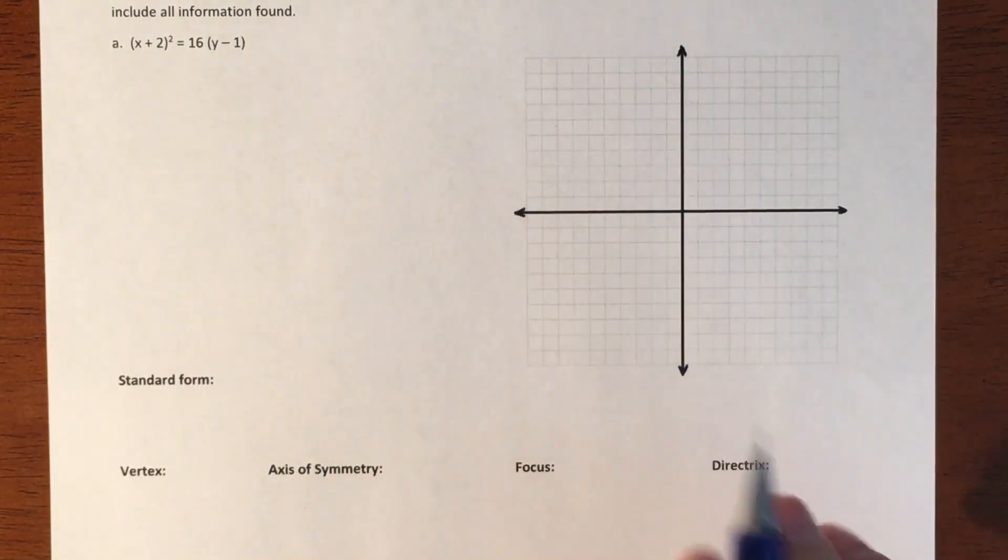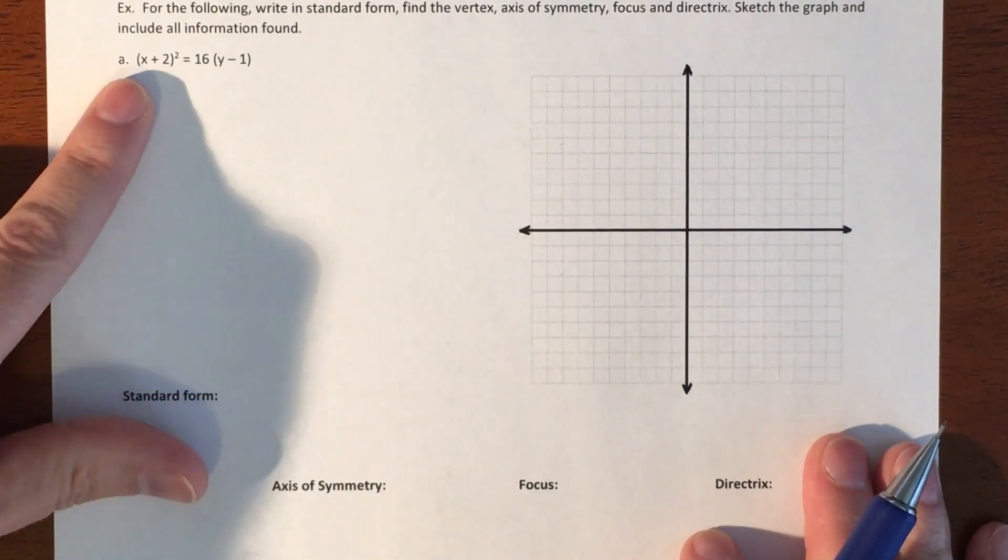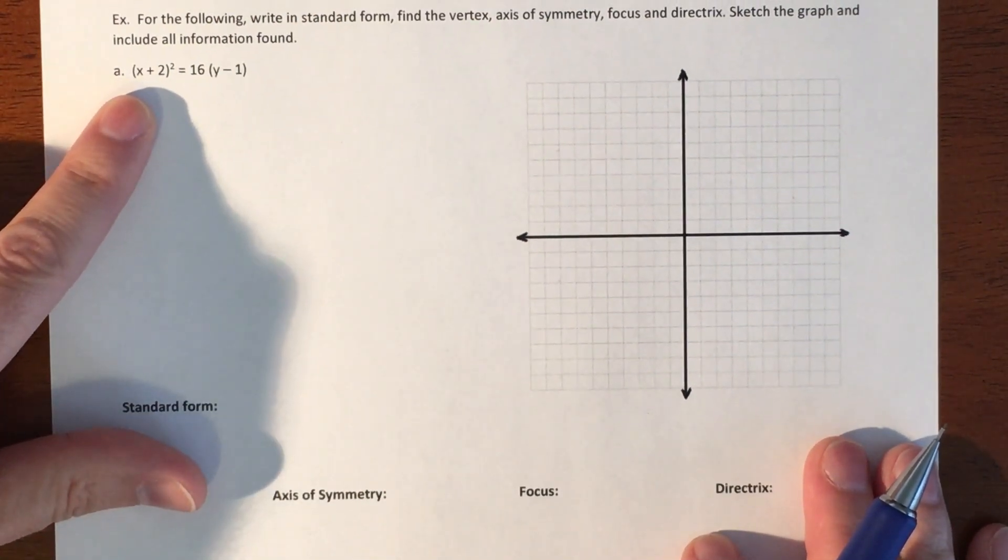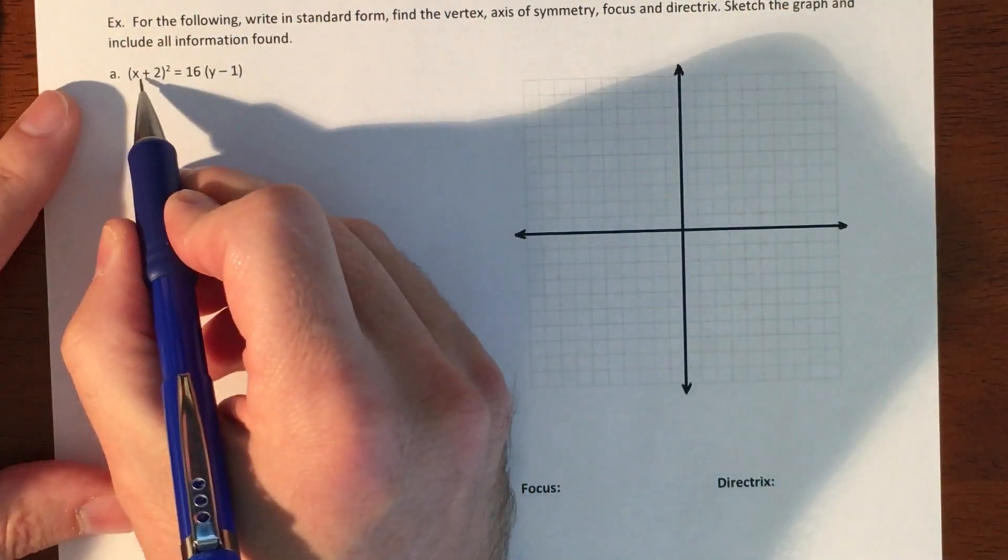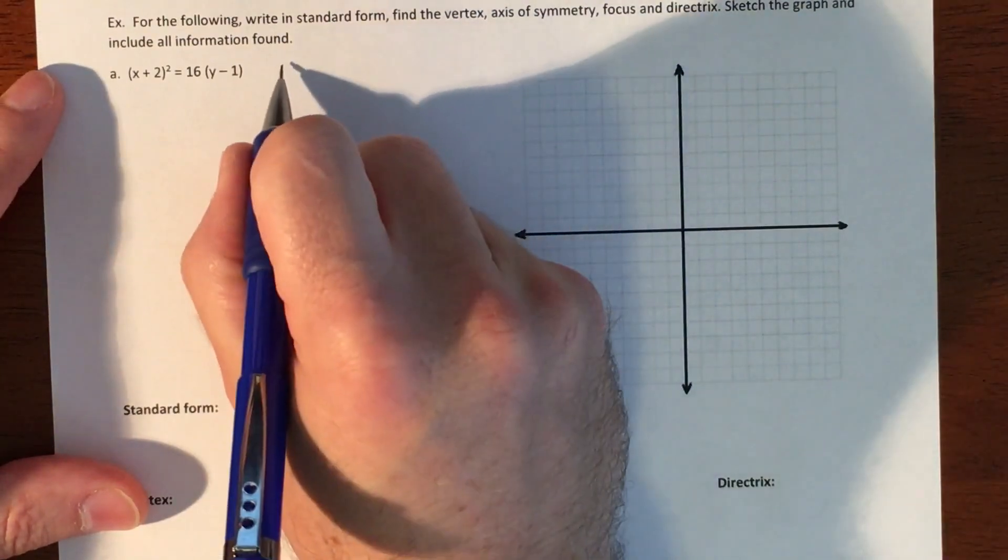If I understand where all the pieces mean, I can build and figure out what my vertex is, my axis of symmetry as I build my picture. So here's our first example. Our first example is already in this form. Since it's x being squared, we're looking at an up and down kind of a look.